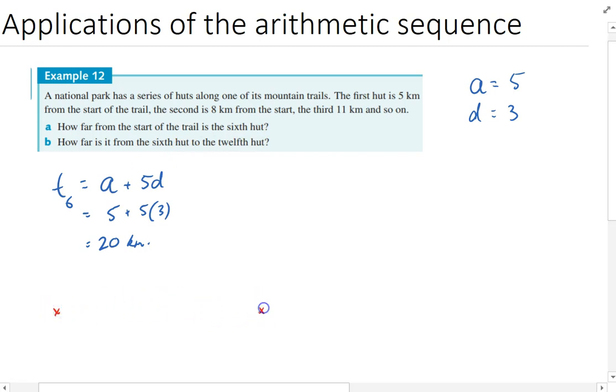Here's our start line. Here's the first hut, second hut, third hut, fourth hut, fifth hut, and sixth hut. That's not a hut, just the start line. It's 5 km from there to there and 3 km for each of these. So 20 km in total.